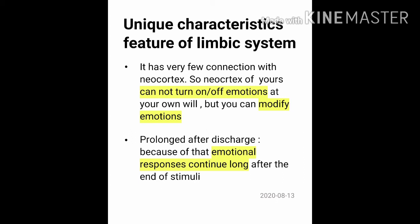There are two unique characteristic features of the limbic system. First, it has very few connections with the neocortex, so you cannot make your emotions turn on or off at your own will. If you have an emotional experience, you cannot immediately switch it off. However, the neocortex can modify emotions. The second characteristic is prolonged after-discharge, which is responsible for emotional responses continuing long after the end of the stimulus.